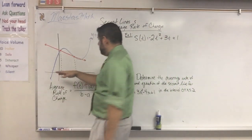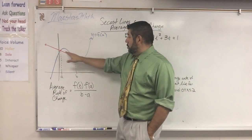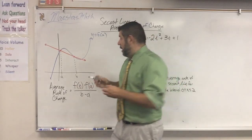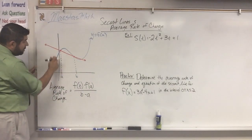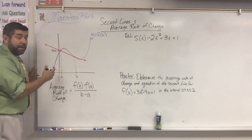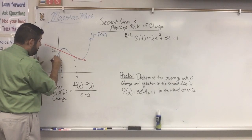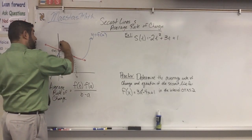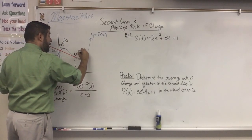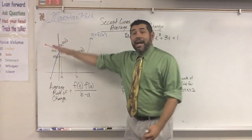Here you can see that the red line is my secant line. It crosses through two points: x equals a and x equals b. At x equals a, this point is f of a, because I would plug it into my function. And this point right here is f of b. So I have the point (a, f(a)) and the point (b, f(b)). All I'm saying is that it's a line that goes through a function.